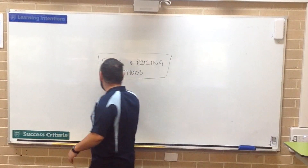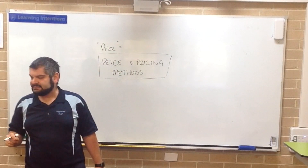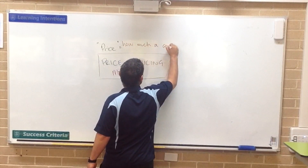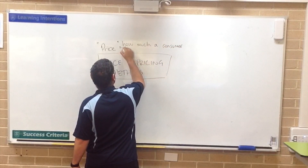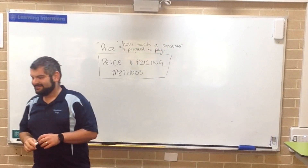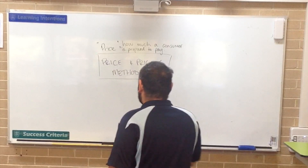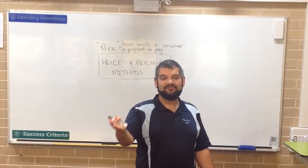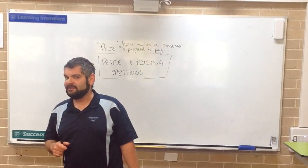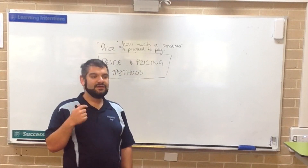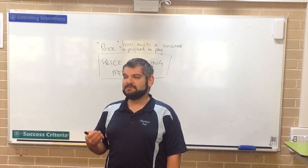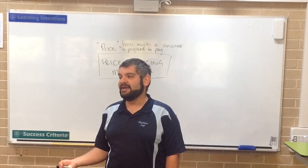Firstly, what's price? Give me a definition of what price is in the first place. Price is how much the consumer pays. So, price and cost is not the same thing. Price is how much people are willing to pay for a product. Cost is how much the business pays to make the product.